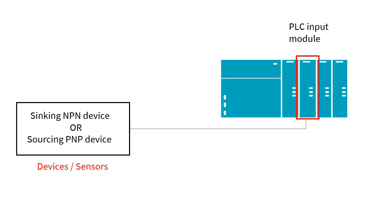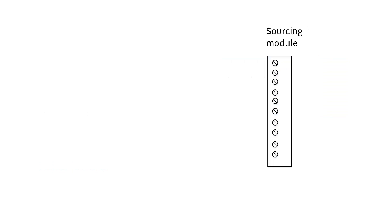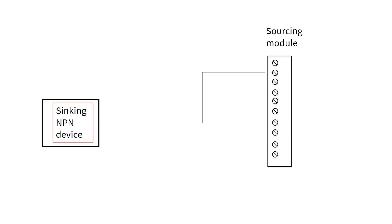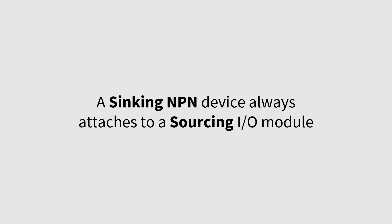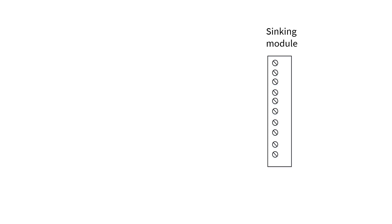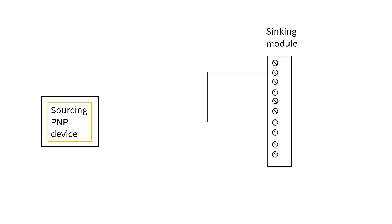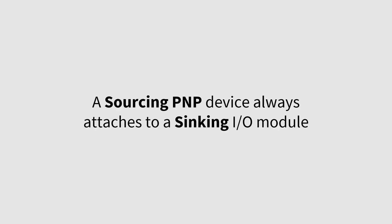The devices connected to the PLC I/O module are also labeled sinking or sourcing. When we have a sourcing module, the device connected to it is a sinking device. In sinking NPN devices, current flows into the device from the module — the module provides or sources the current. A sinking NPN device always attaches to a sourcing I/O module. The same applies for a sinking module: the device connected to it is a sourcing PNP device. In sourcing devices, the current flows out of the device into the module — the module receives or sinks the current. A sourcing PNP device always attaches to a sinking I/O module.